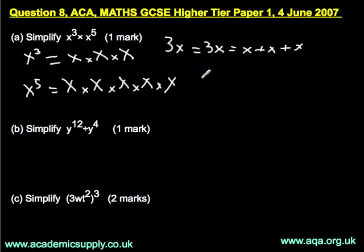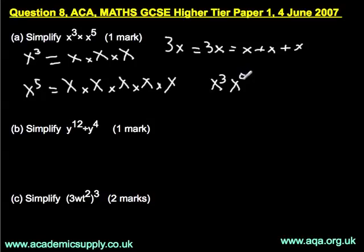Now, when you have powers, a common mistake is to multiply the powers — so doing 3 times 5. That is wrong. What you have to do with powers is add them. So x to the 3 multiplied by x to the 5: you add the powers. 3 plus 5 is 8. The answer is x to the power of 8.